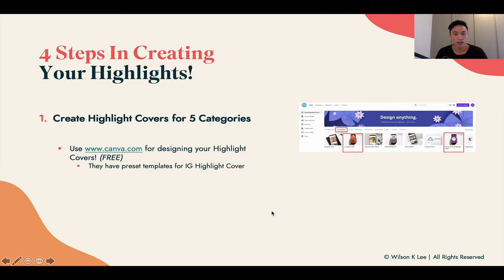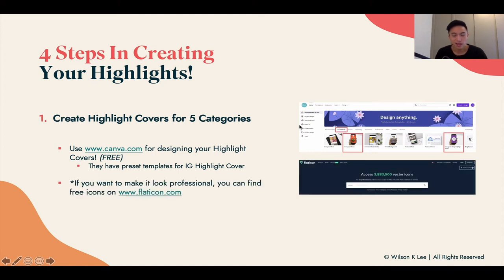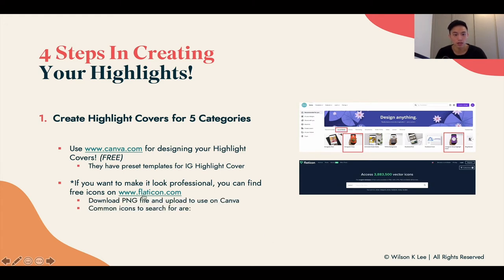Use Canva.com — it's a free tool that lets you create these covers. Once you go on Canva, click on Instagram story or Instagram highlight cover, and it gives you the proper dimensions already set up, completely for free. If you want to make it look even more professional, go to Flaticon.com, which lets you find free icons. Just download the icon image and upload it back into Canva for a professional-looking highlight cover.